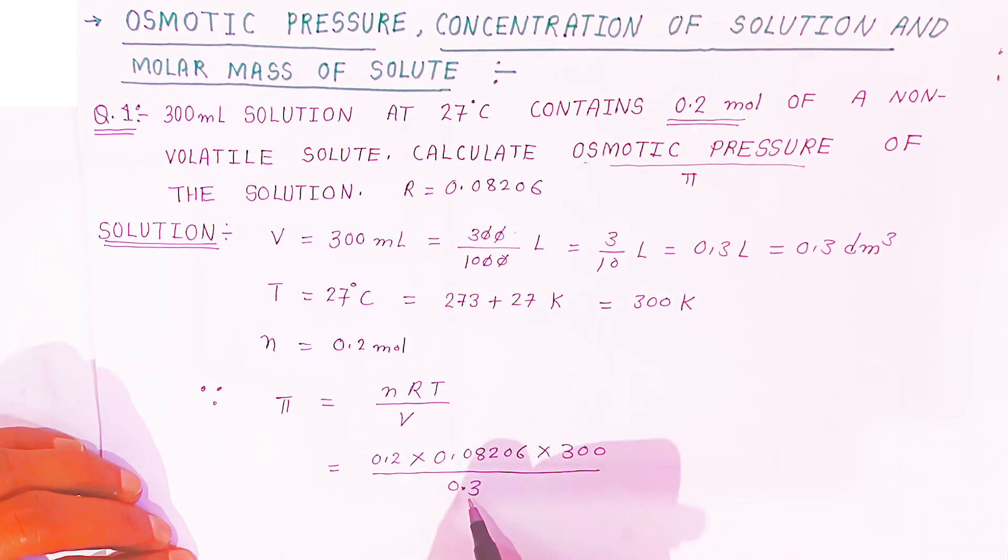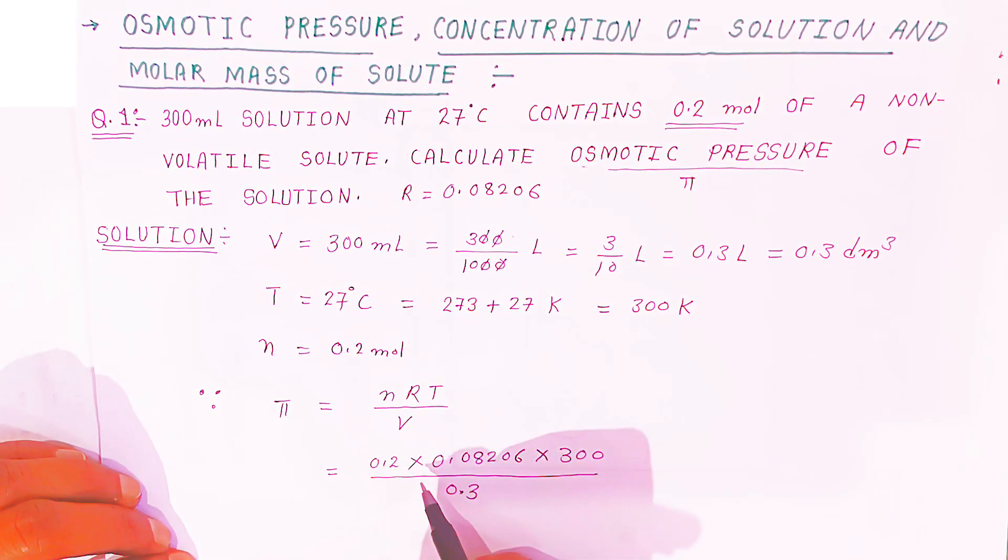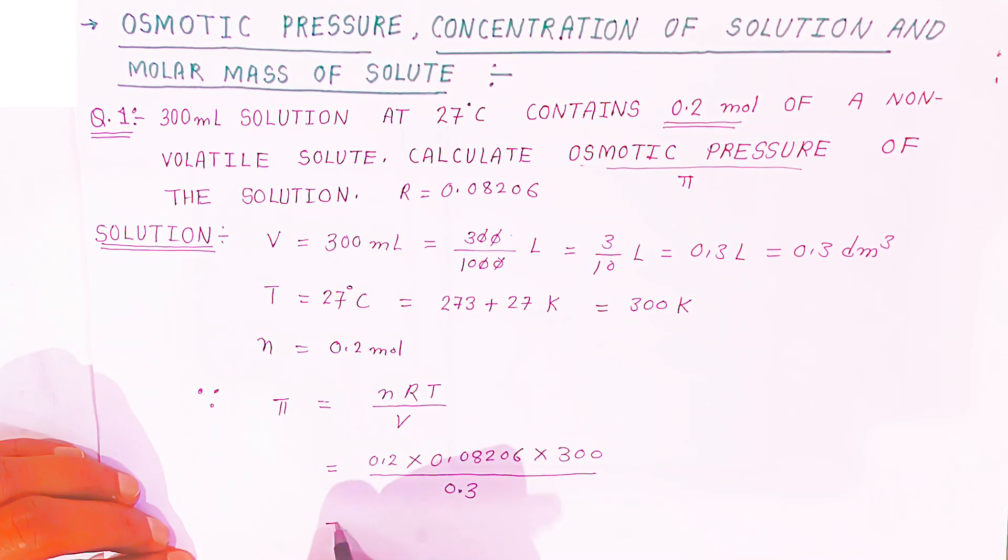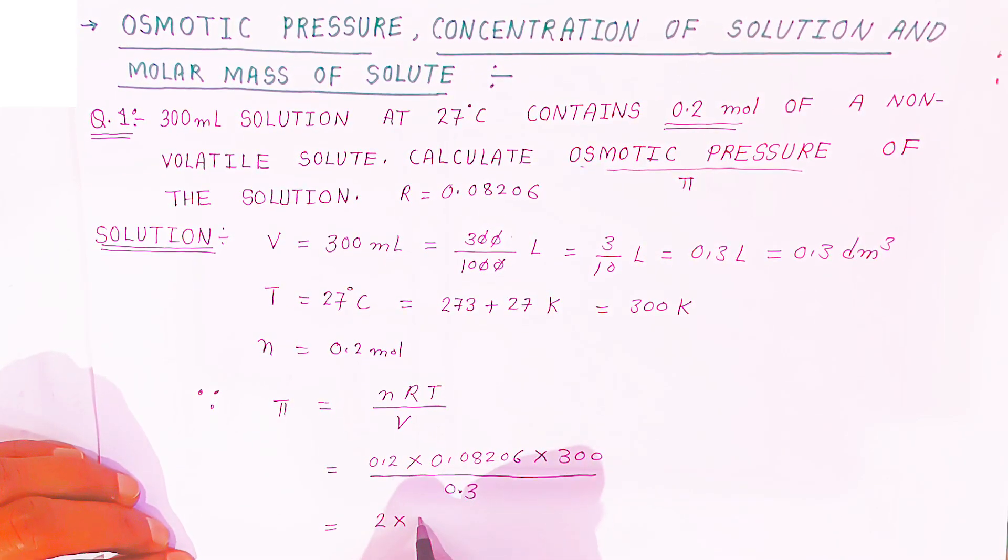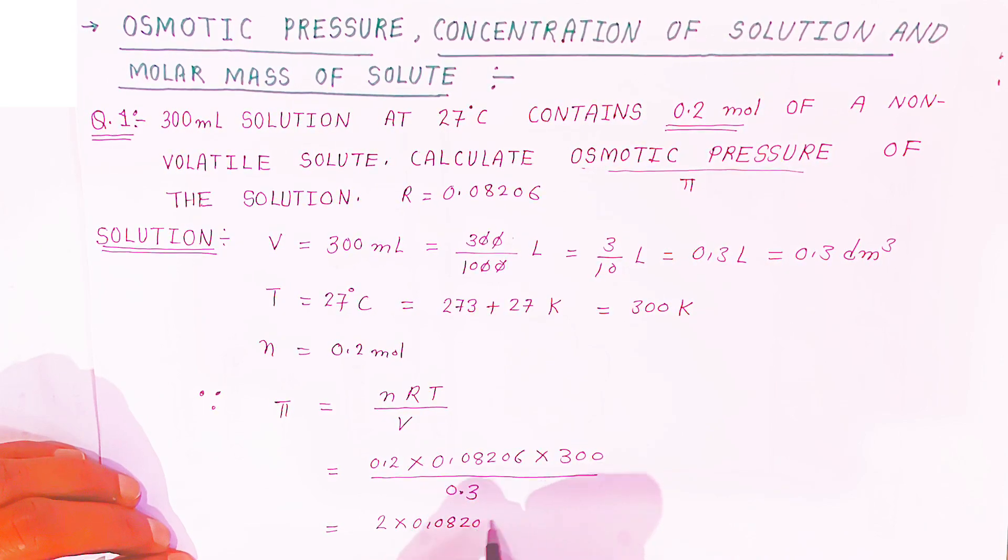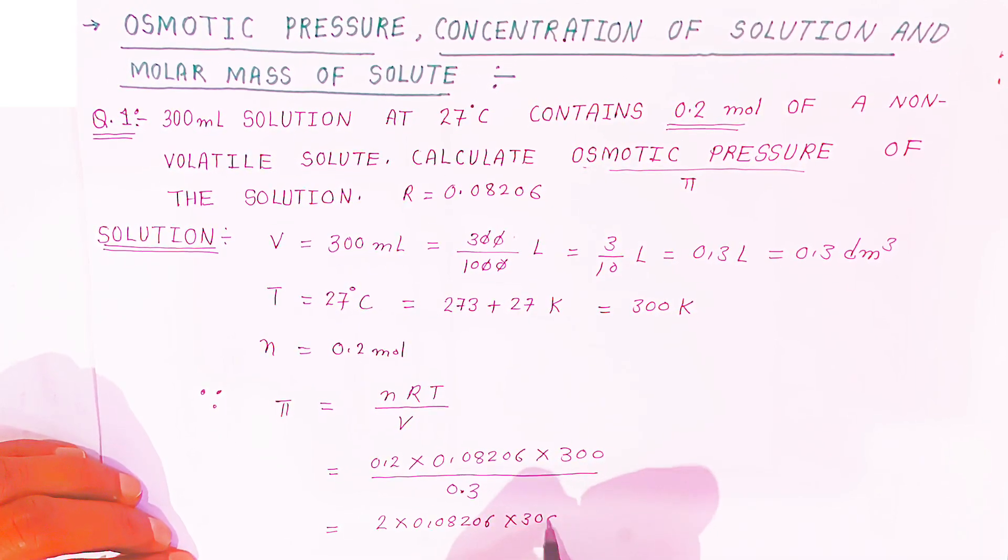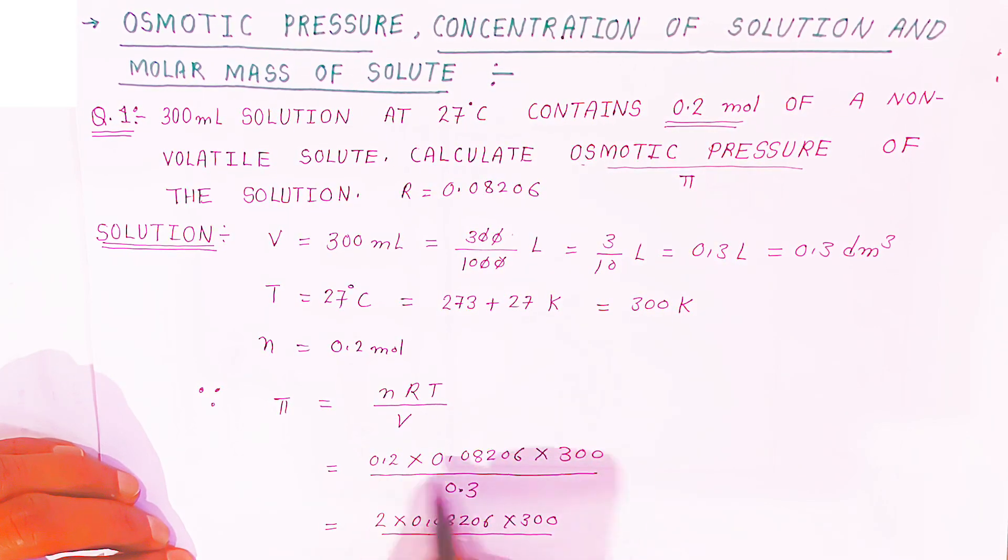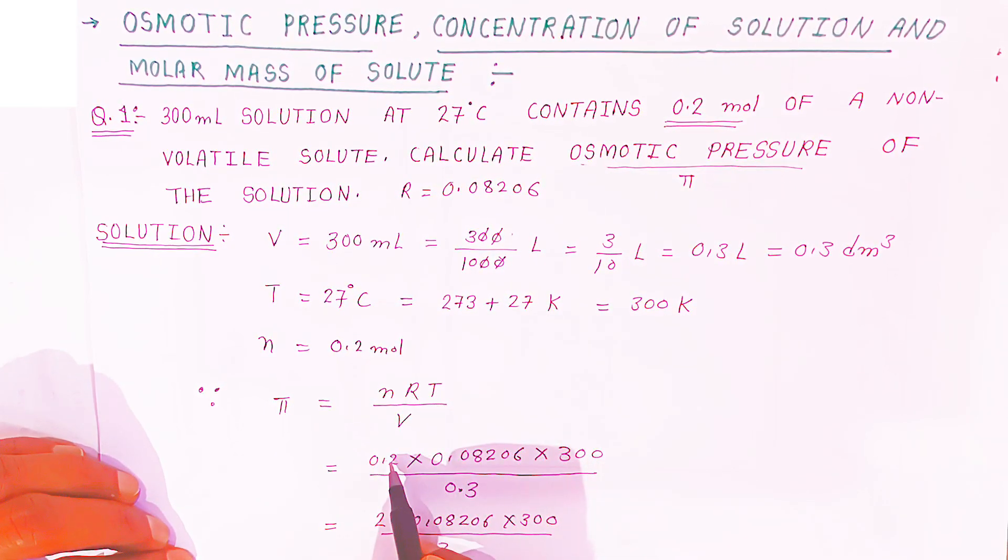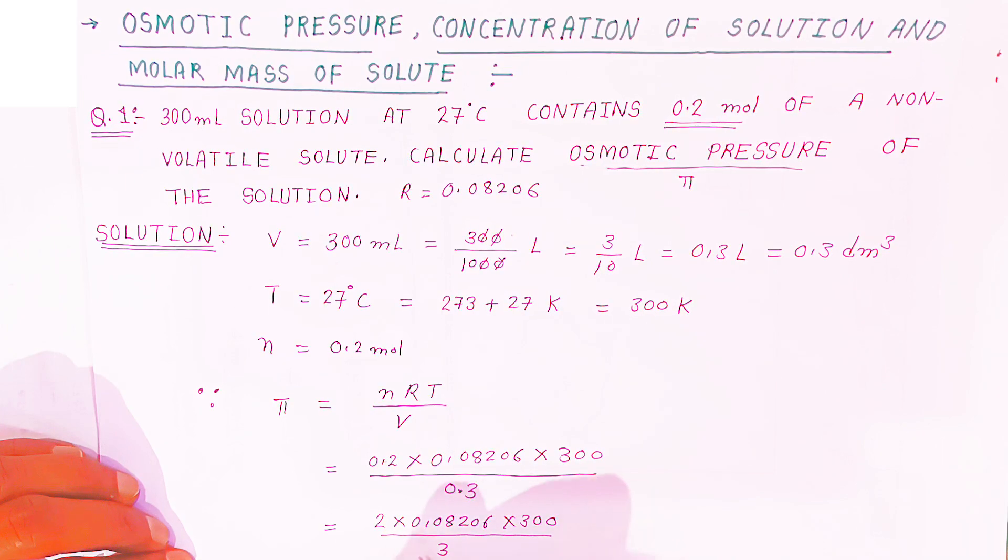Now if you want to remove this 0.3, you have to multiply in numerator and denominator by 10. So this decimal will shift here. By multiplying, it is converted into 2 × 0.08206 × 300 upon 3. Now it is converted because we have removed these decimals. We have multiplied here by 10, this denominator also by 10.